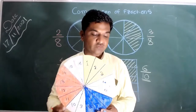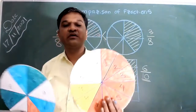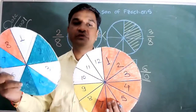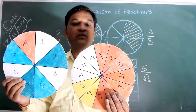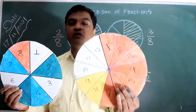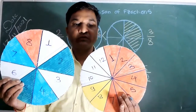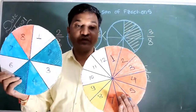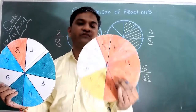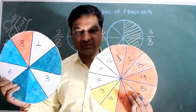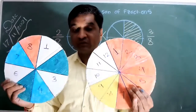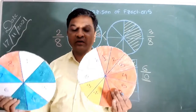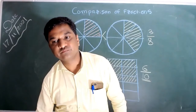But what about unlike fractions? If we take two circular disks — one divided into 12 equal parts and another divided into 8 equal parts — and compare the fraction of red on the first disk, which is 7 by 12, with the fraction of blue on the second disk, which is 2 out of 8, by looking at the figure you can see that the fraction of red is greater. But when given this problem numerically, how do we compare unlike fractions? That we will see in the next video. Till then, goodbye.